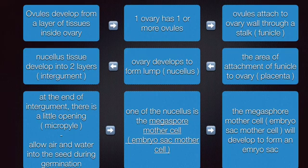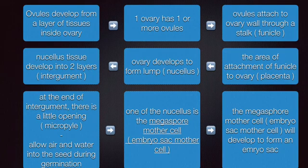Then, the ovaries develop a nucellus, which forms a lump. The nucellus tissue develops into two layers of integument. At the end of the integument, there is a little opening also known as the micropyle. It allows air and water into the seed during germination. One of the nucellus cells is the megaspore mother cell, or embryo sac mother cell, which will develop to form an embryo sac.